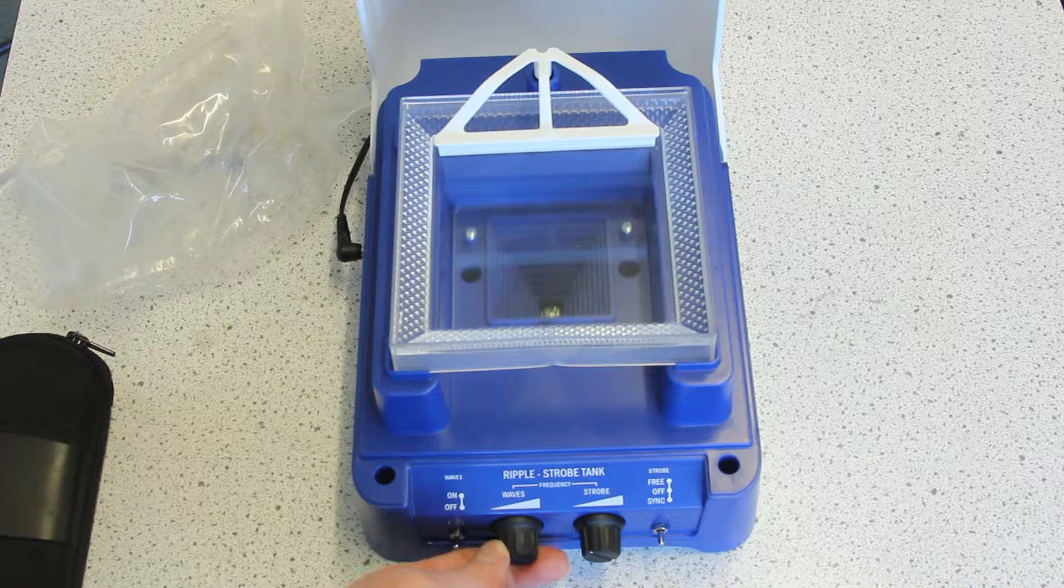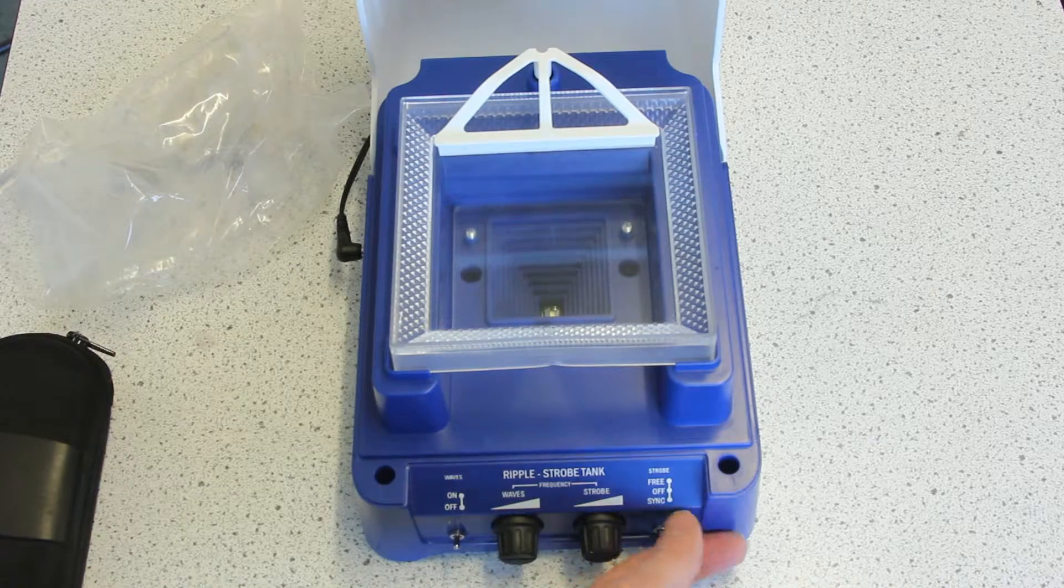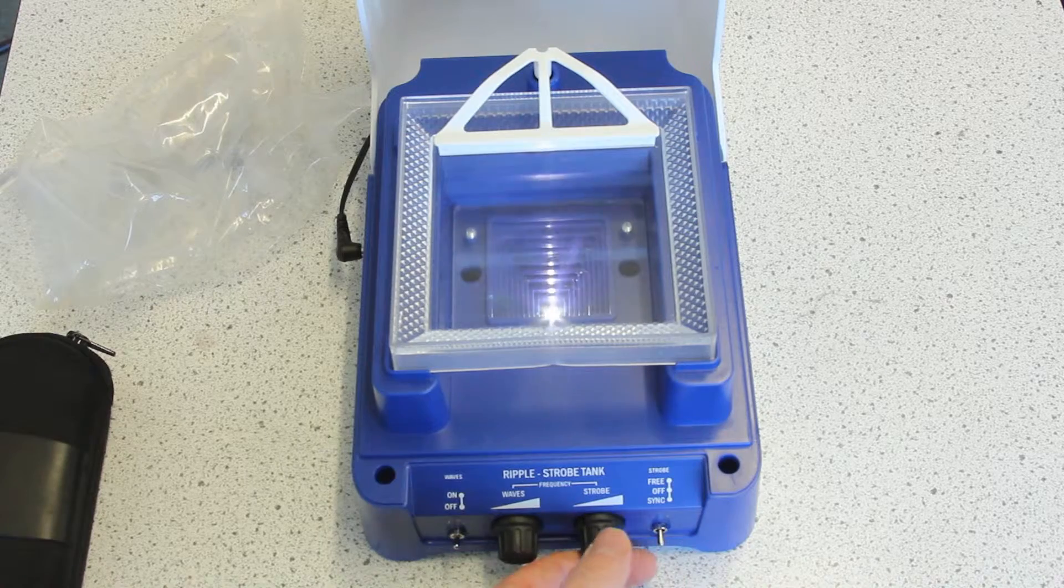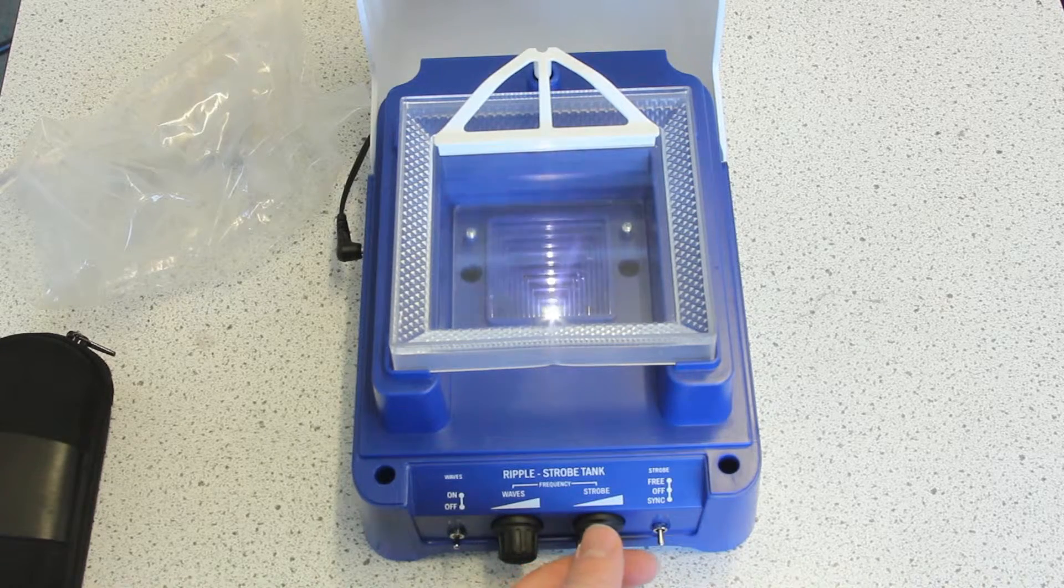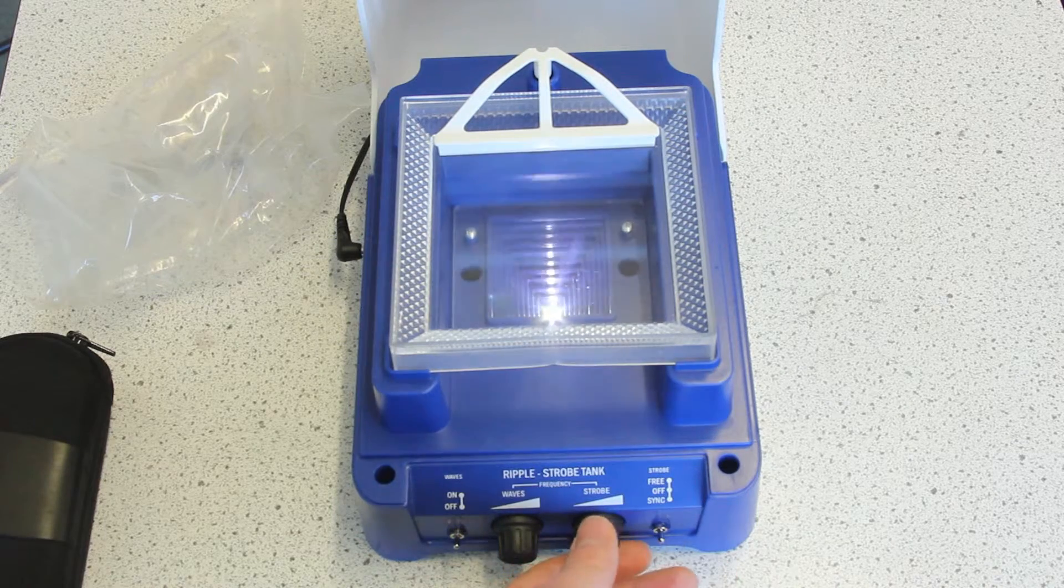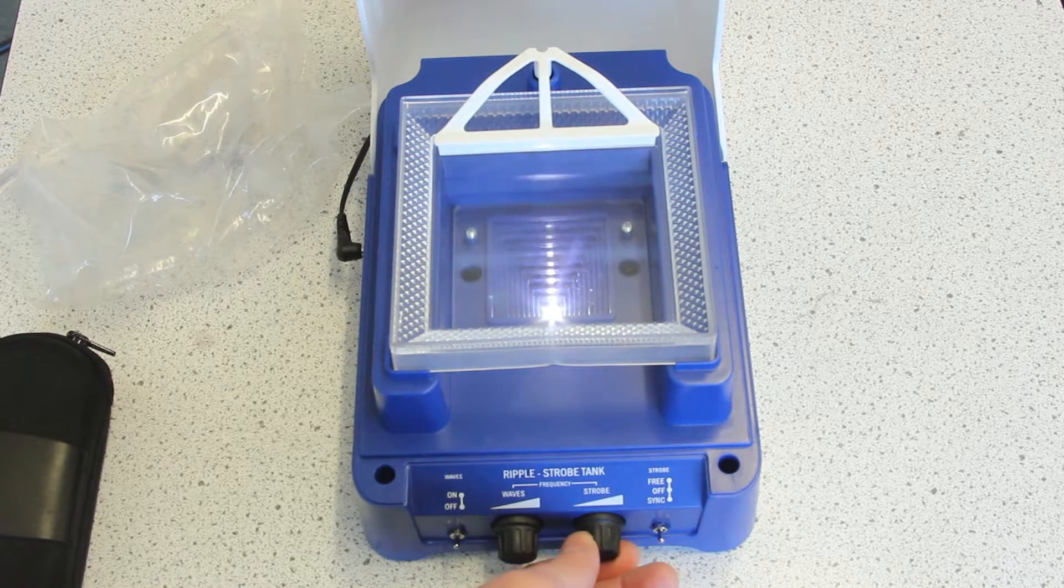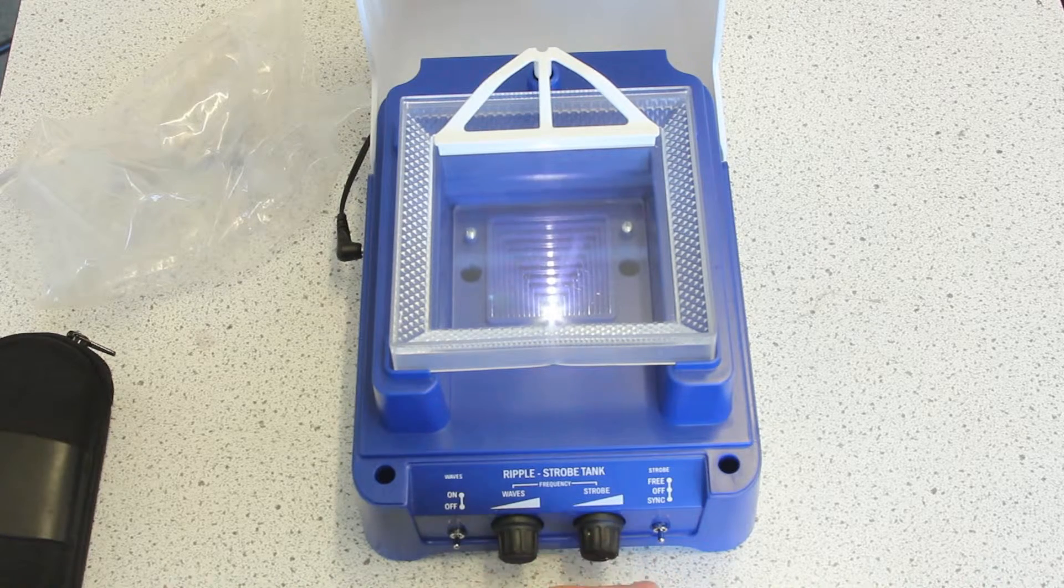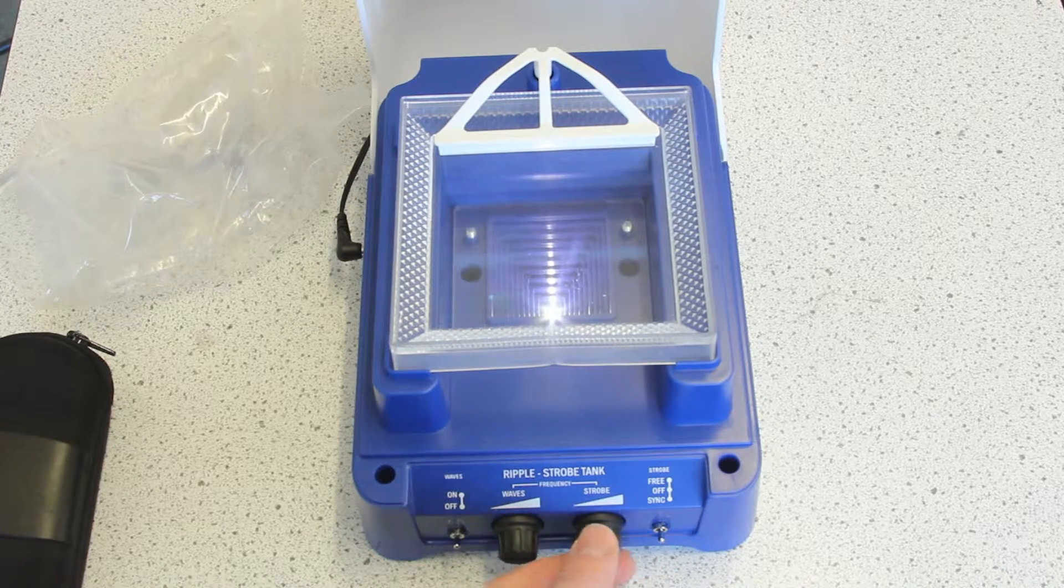And on the right hand side is the switch for the strobe light. The strobe light obviously flickers and you can change the frequency of that as well. If I put it right at the top you can change the frequency to a very low frequency flashing, very high which is going to look like a solid on but it is actually turning on and off very quickly.